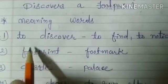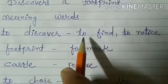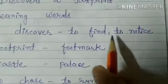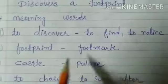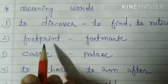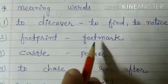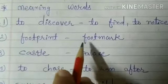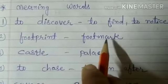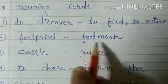Number 1: to discover. The meaning of discover is to find, to notice. Number 2: footprint. Footprint means footmark — yani pair ki jo chhaap hoti hai, pair ka jo mark hota hai, usko bolte hai footmark.